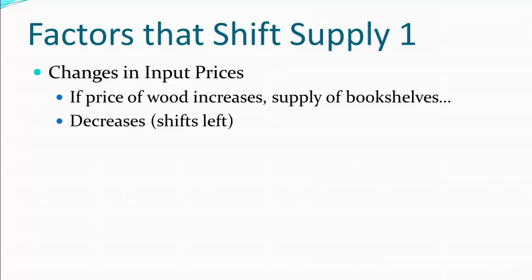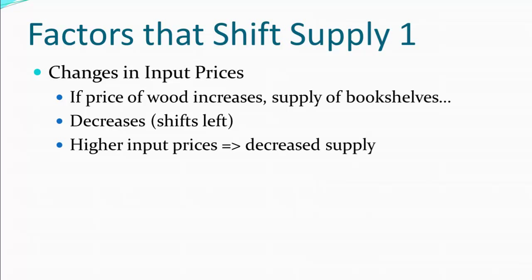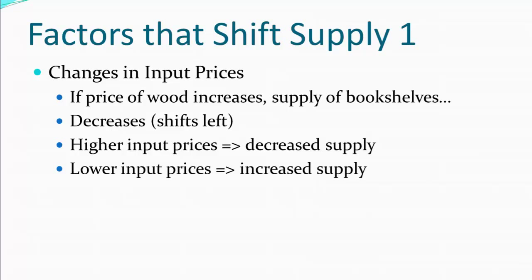That is, it shifts to the left. This shows the general principle that if we have higher input prices, they will tend to decrease the supply of those goods that use that particular input. On the other hand, if we have lower input prices, we have an increased supply. It becomes more profitable to provide the thing, so we become willing to provide more of it, or more suppliers enter the market.